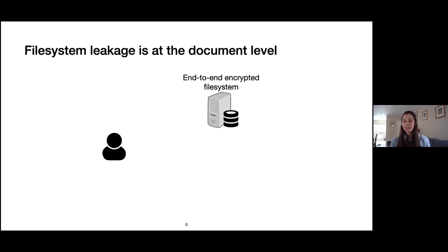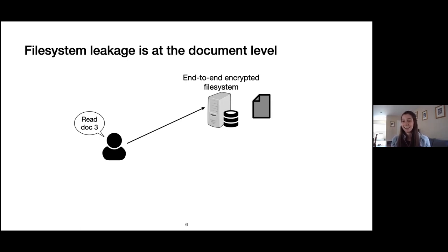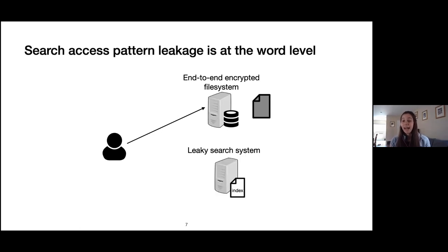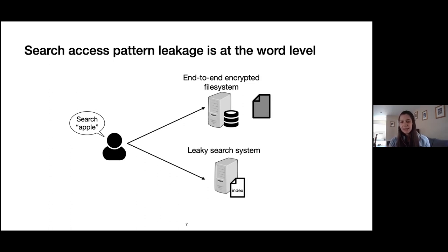Before diving into search access patterns, I want to contrast them with leakage in many end-to-end encrypted file systems. If a user reads document 3, the file system server learns that the user requested document 3, but not its contents. The concern is that adding a leaky search system on top of this allows an attacker who has compromised the server to learn more — specifically, word-level information about document contents — that they couldn't learn from the file system alone.